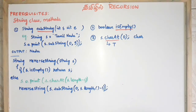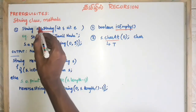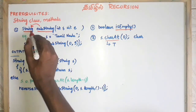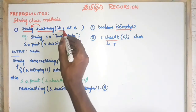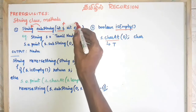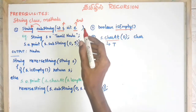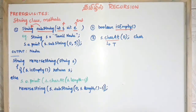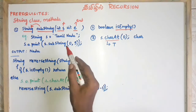We are going to do the string reverse program in the recursion class. In the substring method, there are two substring methods in the string class. The substring method returns a string data type. It takes a starting value and an ending value — these are index values.